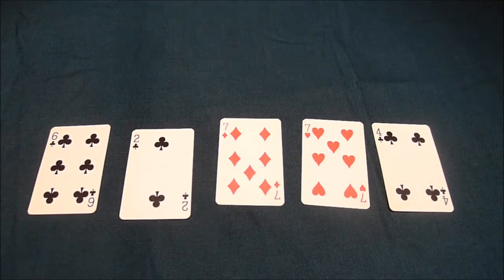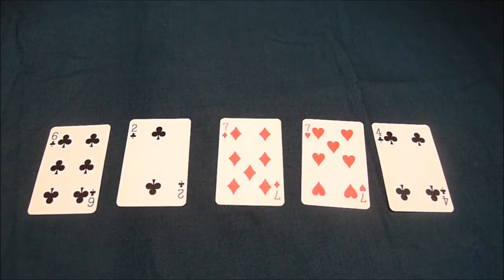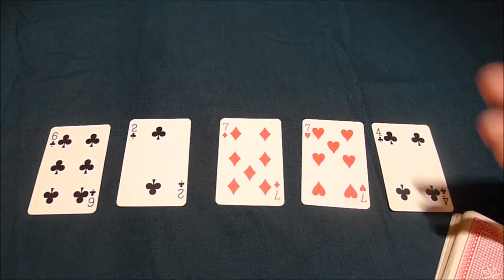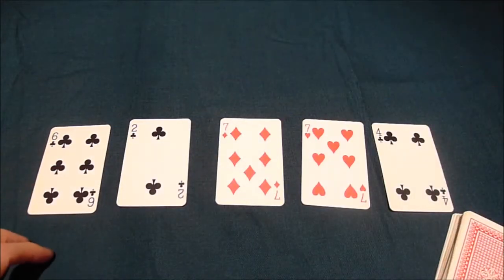Now, imagine these five cards are a population of animals in an ecosystem. Say they're frogs in a pond, and this is the first generation of frogs. They're going to give birth to another generation of frogs. But which ones are going to make it to reproductive age?